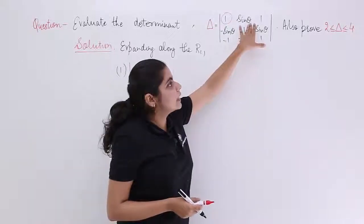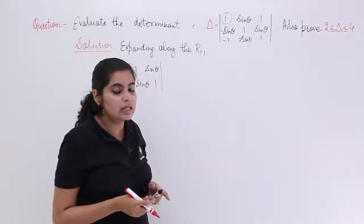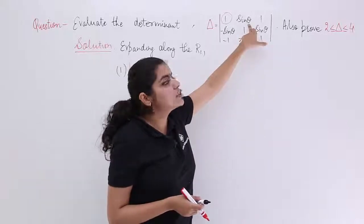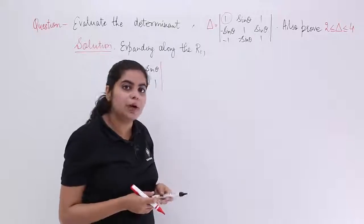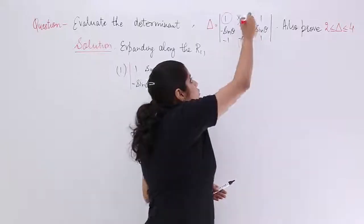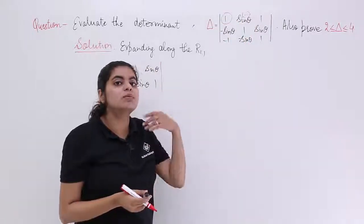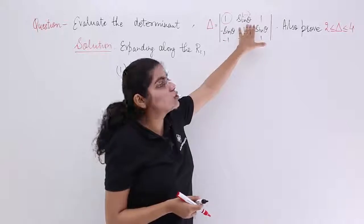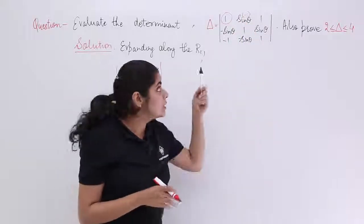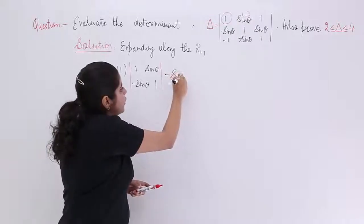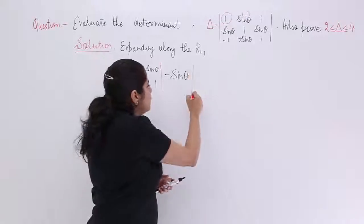Moving to the second element: sin theta, which is a 1st row, 2nd column element — A₁₂. Since 1 + 2 = 3, which is odd, using the formula (−1)^(i+j) = (−1)^(1+2) = (−1)^3 = −1, it becomes minus sin theta. All who have been watching my previous videos must know how to do this.